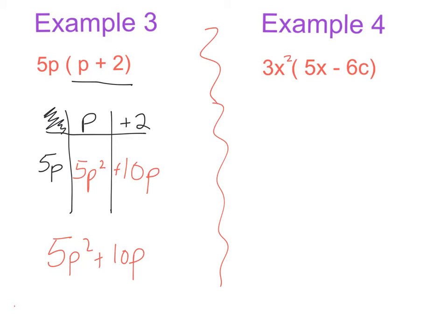In example 4 here we have 3x squared multiplied by 5x minus 6c. So lay it out correctly.